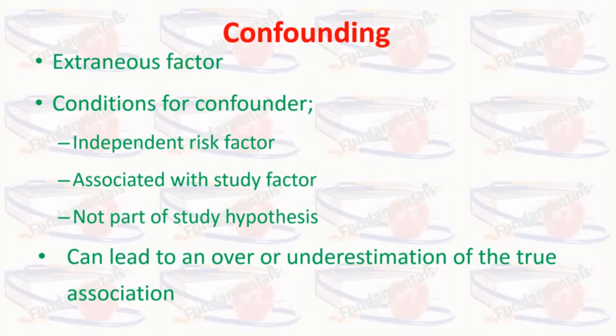The other factor which can affect the results of a study is confounding. Confounding is an extraneous factor that is not the factor or relationship under study. It is a third factor which is related to both the exposure and the outcome, and which accounts for some or all of the observed relationship between them.